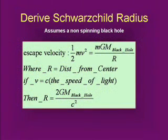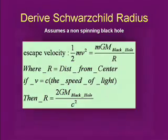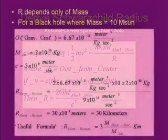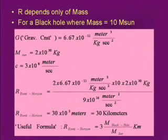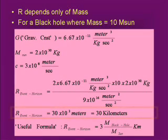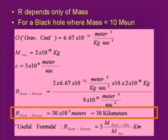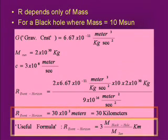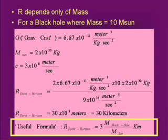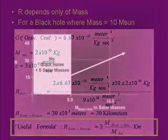Suppose we have an escape velocity: the energy of something has to equal the gravitational potential energy — that's represented by the first equation. Solve it and you come out with a nice formula for R, which is just proportional to the mass. For an example mass of 10 solar masses, putting in the constants, R equals 30 kilometers. In other words, something 10 times as massive as the sun is the size of a city. Since the Schwarzschild radius is proportional to the mass, you can scale it relative to a solar mass, and from there make a plot. There are no black holes less than 5 solar masses, so that region is excluded, but after that it's linear.